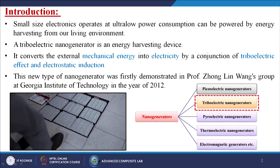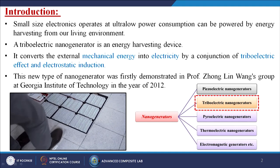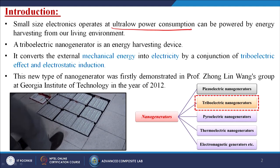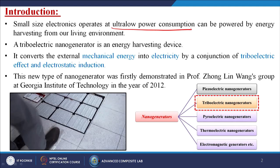Before starting the introduction: what is the triboelectric nanogenerator? Basically, this triboelectric nanogenerator is a small-size electronics device that operates at ultra-low power. Ultra-low power consumption can be powered by energy harvesting from our living environment. Basically, what we are going to do is apply some kind of load, pressure, or friction and then generate electricity from that.